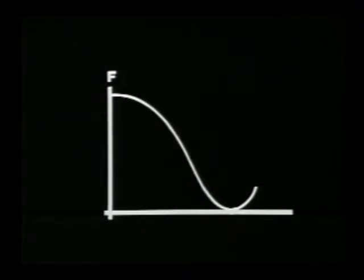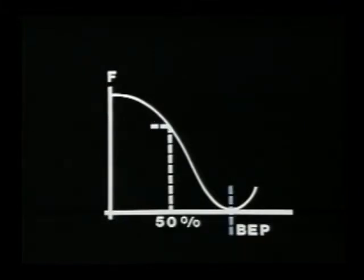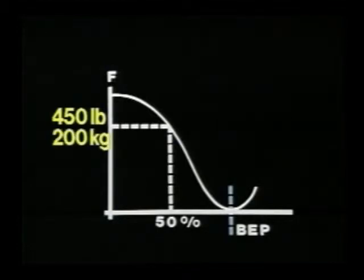It should also be noted that the impeller radial force developed at a capacity halfway between shutoff and BEP can still be as high as 450 pounds or 200 kilograms.